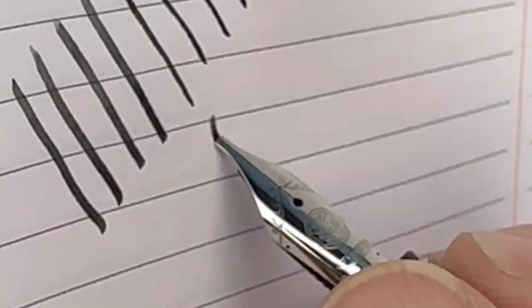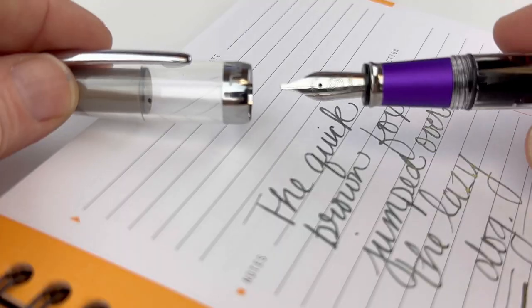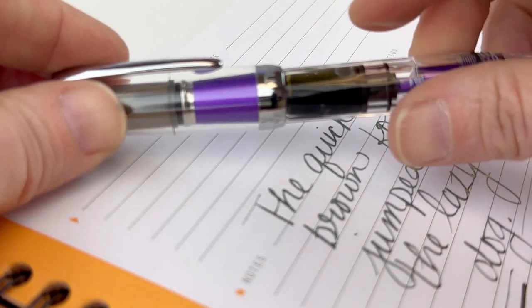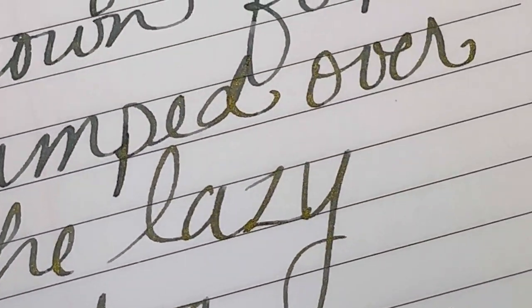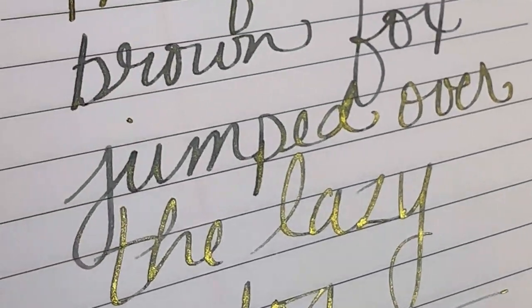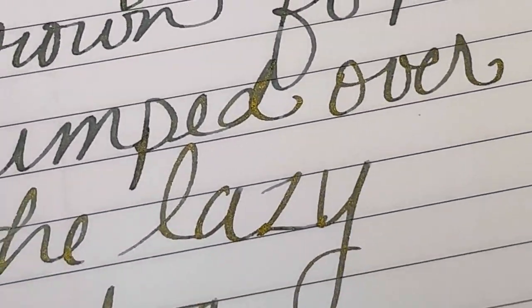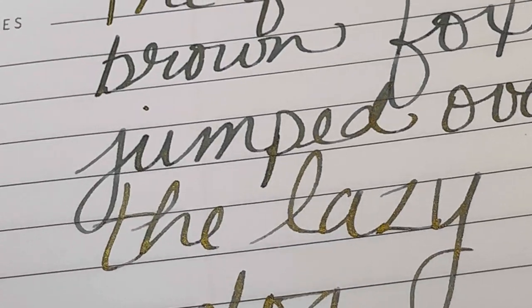The most common nib for people to get is the medium but I really have fun with the stub nib just because as you can see there you get the different variations in line width depending on how you're holding your nib to the paper. And this is a look at the Wearingeul I Am A Cat ink with the TWSBI Diamond ALR Stub Nib.